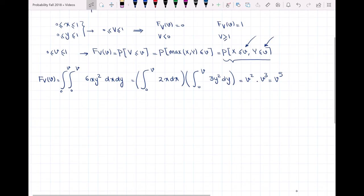So the complete CDF is: 0 when v is less than or equal to 0, v to the fifth when v is between 0 and 1, and 1 when v is greater than 1.